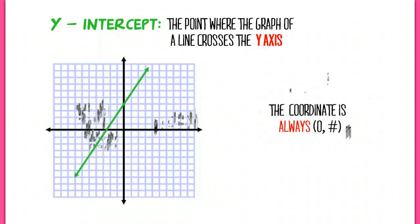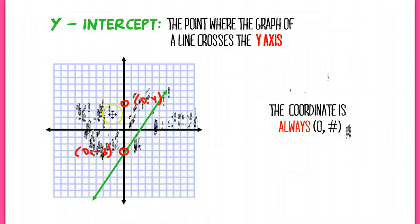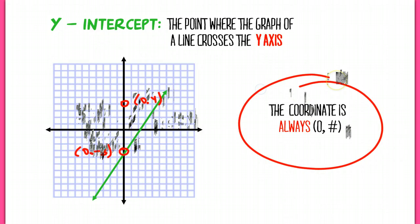Now for y-intercepts — the y-intercept is where the graph crosses the y-axis. In this case it crosses at 0, 4. If I move the line down, it crosses at 0, negative 3. You always see a 0 for the x-value. So a y-intercept's coordinate is always 0 comma a number. These are your big ideas for x-intercept versus y-intercept.